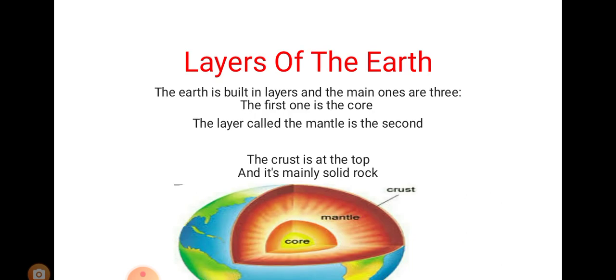The structure of the earth is divided into three major components: the crust, mantle and core. The earth is built in layers and the main ones are three. The first one is the core, the layer called the mantle is the second, the crust is at the top and it is mainly solid rock. Each layer has a unique chemical composition, physical state and can impact life on earth's surface.